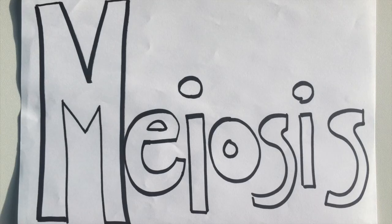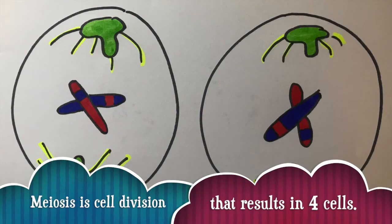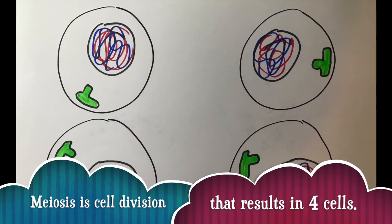Hi there. Welcome to April, Olivia, and DeeDee's video on meiosis. You might be wondering what meiosis is. Meiosis is cell division that results in four cells. These cells are called gametes.